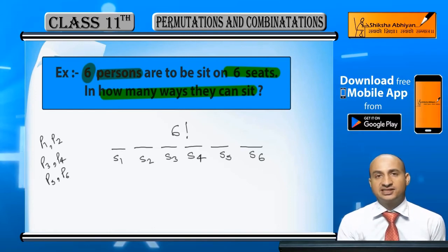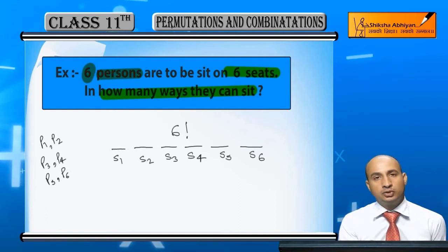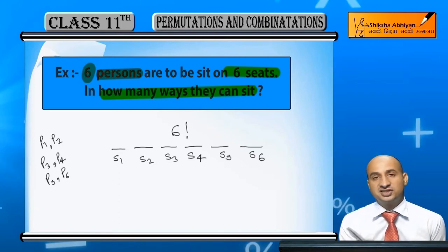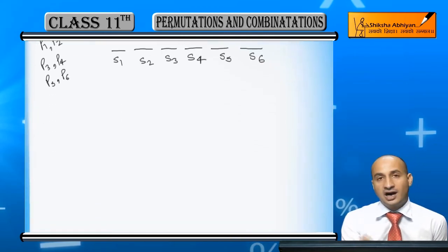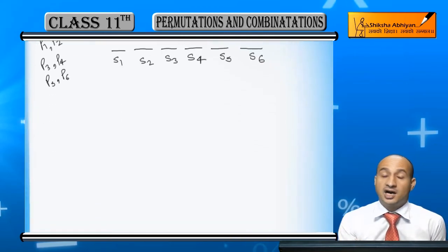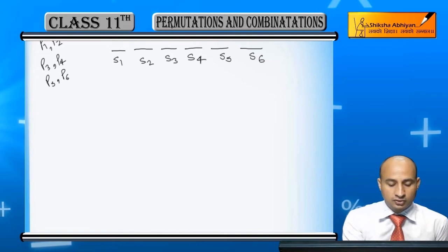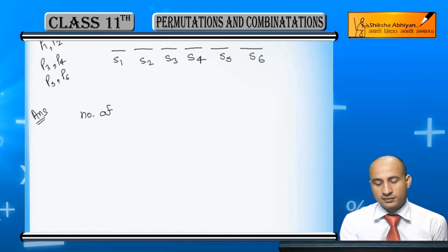The total choices for each seat is 6. You can place 6 persons in each position. If we look at this condition, the number of seats and persons are equal.